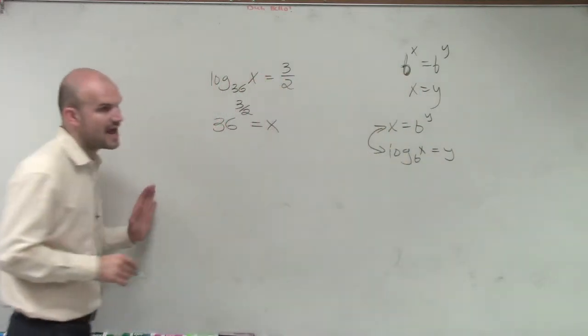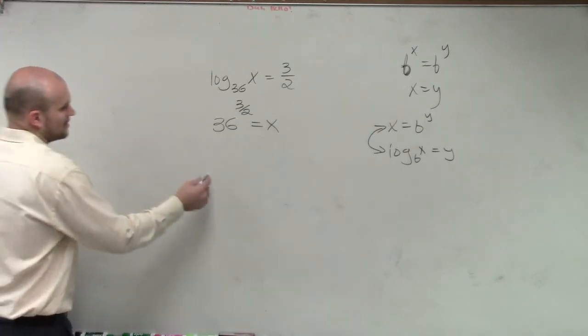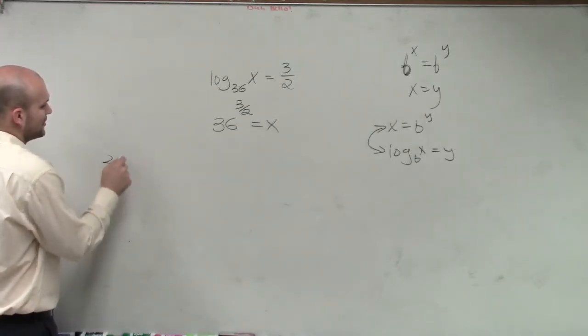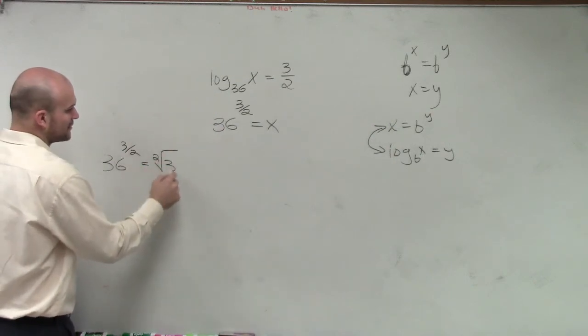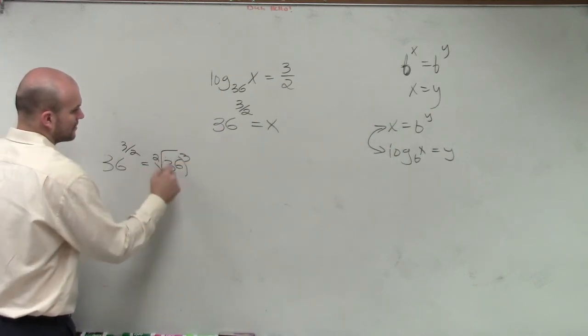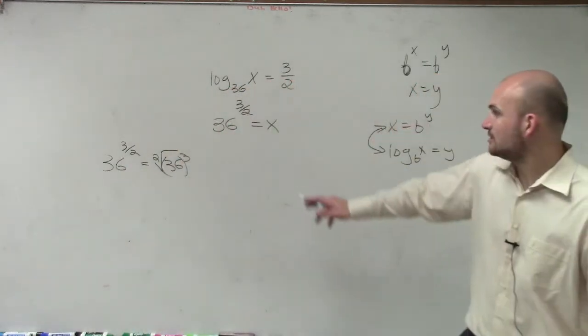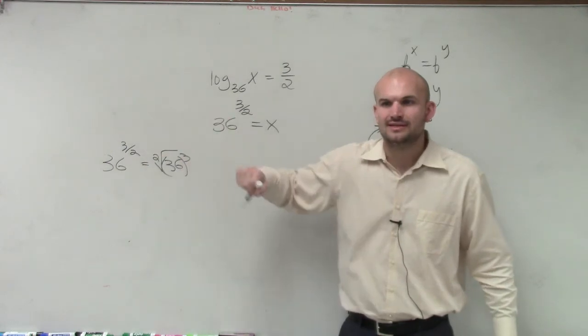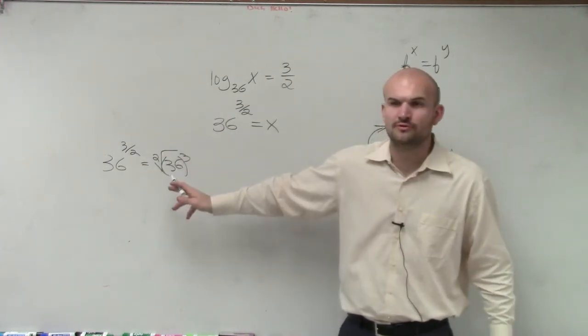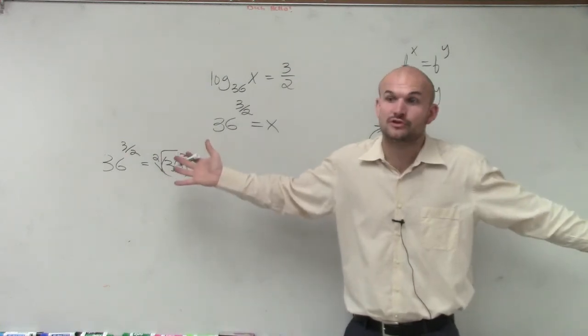So remember, 36 to the 3 halves. Now ladies and gentlemen, you could rewrite this. So you could say 36 to the 3 halves is equal to the square root of 36 cubed, right? If you wanted to do the root of that, that is equal to that. We've already practiced that. Now, the issue with this is, do you guys really want to compute 36 cubed and then take square root of it? If you have a calculator, it's not bad. You can do it.